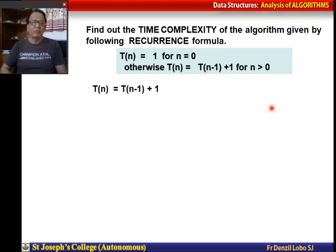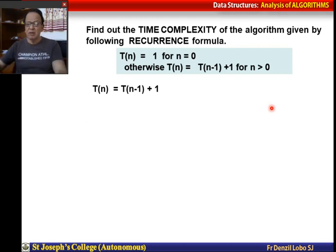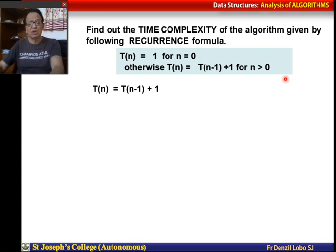For question number 1, find out the time complexity of the algorithm given by the recurrence formula: T(n) = 1 when n = 0, otherwise T(n) = T(n-1) + 1 for all values of n greater than 0. We start with the formula T(n) = T(n-1) + 1.